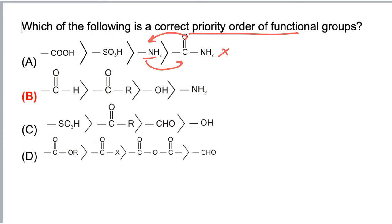In case of B, first aldehyde, then ketone, then alcohol, then amine. This is given according to the correct priority order. So answer B is correct.